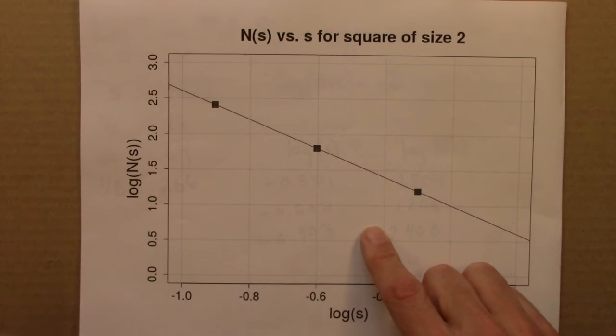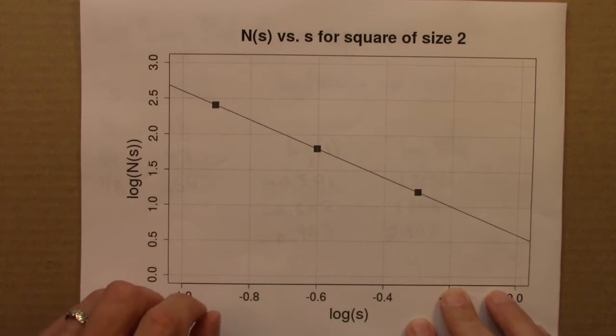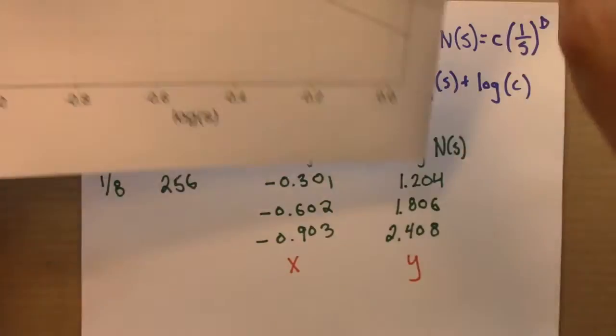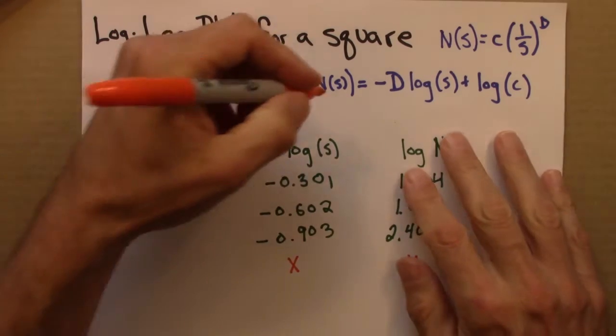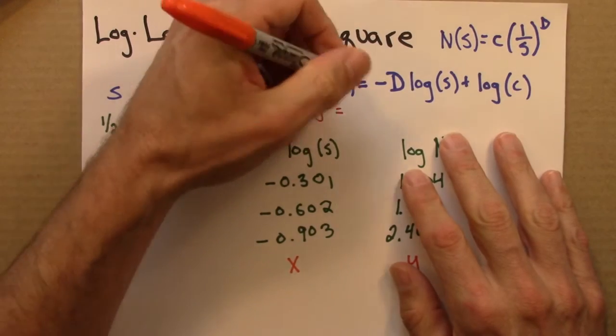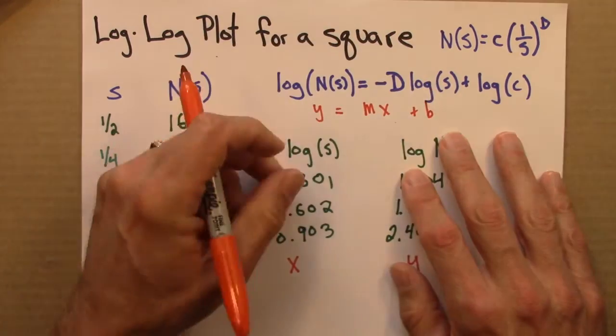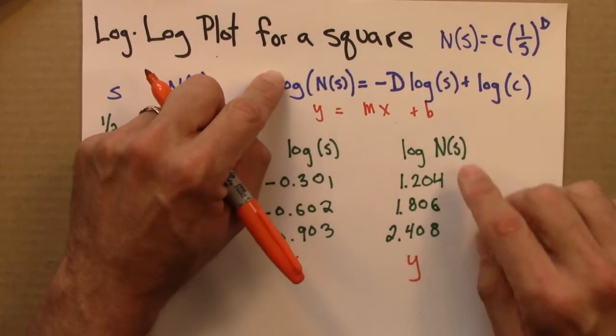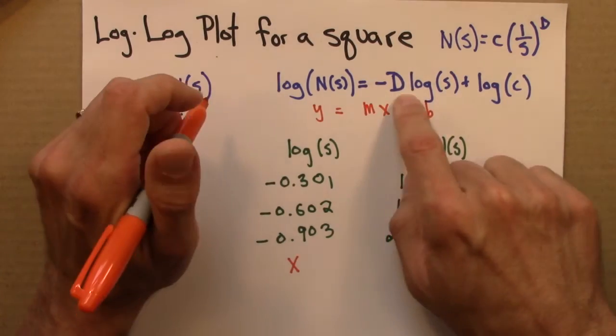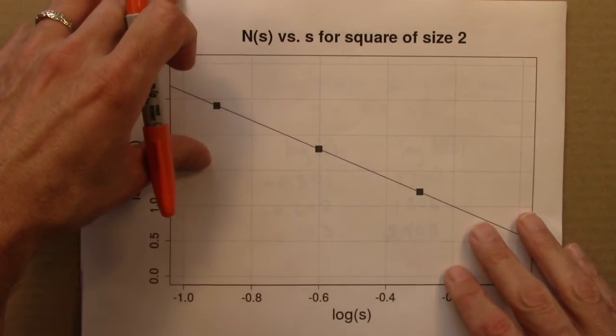So then what we need to do is we need to figure out the slope of this line. And the slope of this line is going to be minus d. Because we have this relationship here. And this is a line in disguise. Y equals mx plus b. So log s plays the role of x. Log n plays the role of y. So minus d is going to be the slope.